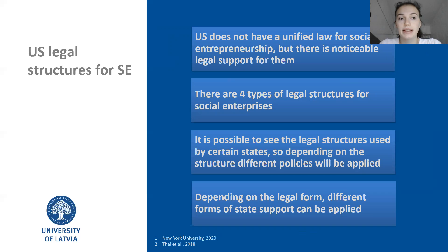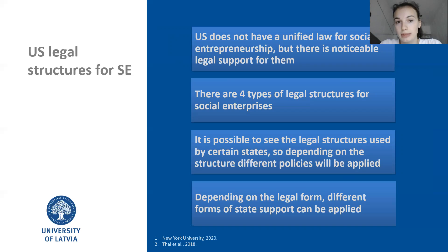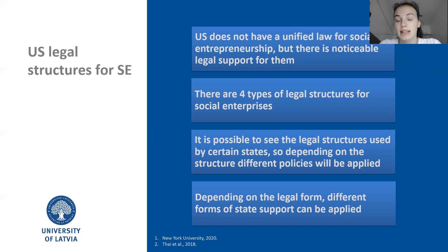Let us switch to the United States legal structure for social entrepreneurship. In general, different legal structures are used for social enterprises worldwide. The United States does not have a unified law system for social entrepreneurship. New York University School of Law created a so-called social enterprise law tracking tool. Using this tool, every person can find some relevant legislative action across 50 USA states and the District of Columbia, and it is possible to see the legal structures used by certain states. Depending on the structure, different policies will be applied.